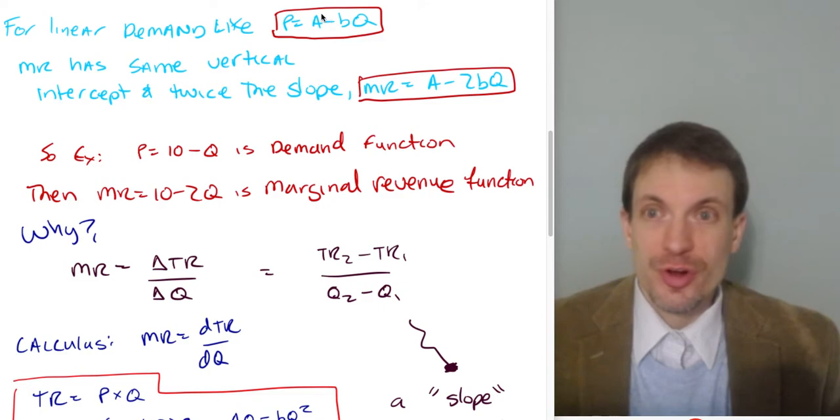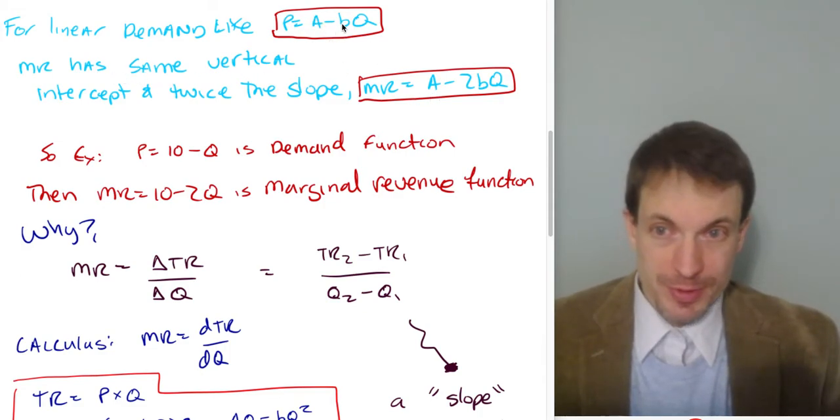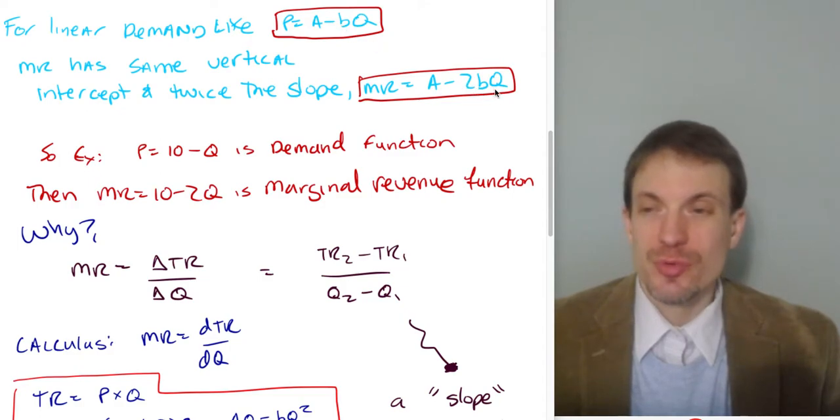A, this is the vertical intercept. And minus B, that's the slope. So for a linear demand like this, marginal revenue will have the same vertical intercept, A, but twice the slope. So I'll multiply this by 2 and this will give me my marginal revenue curve. And this will give me marginal revenue lying strictly below the demand curve.